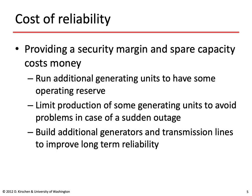Reliability has a cost in terms of providing a security margin and some spare capacity. In particular, we have to run additional generating units to have operating reserves. We have to limit production of some cheap units to avoid problems in case of a sudden outage in the transmission network, or we have to build additional generators and transmission lines to improve long-term planning reliability.